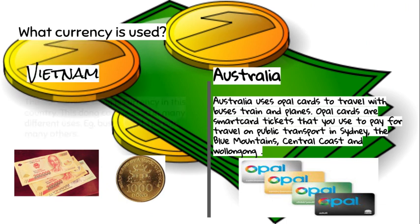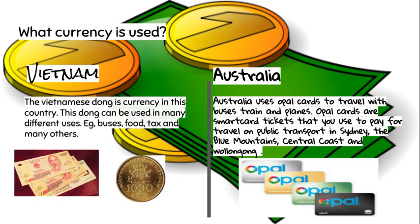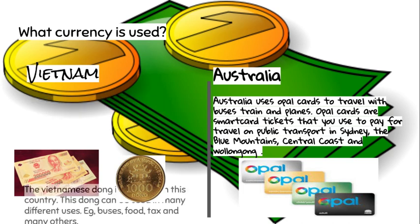Vietnam: the Vietnamese dong is the currency in this country. The dong can be used for many different things, for example, buses, food, tax, and many others.